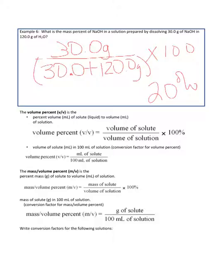Volume percent is very simple — instead of masses, it's volumes, usually measured in liters or milliliters. You have the volume of the solute divided by the volume of the entire solution, times 100%. Tying in with that same theme, we have mass-volume percent, which is the mass of the solute in grams divided by the volume of the entire solution in liters or milliliters, times 100. So we have three ways: mass percent, volume percent, and mass-volume percent.